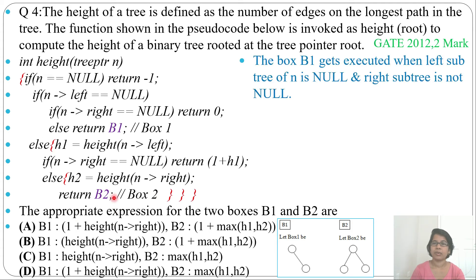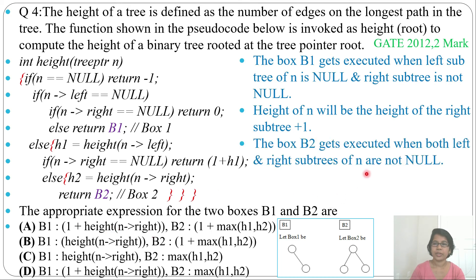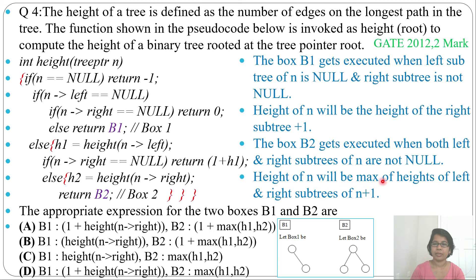Box B1 gets executed when the left subtree of n is null and the right subtree of n is not null. So when there is some right subtree, B1 will execute. The height of n will be the height of the right subtree plus one, because the left is null. So B1 will be one plus height(n.right).